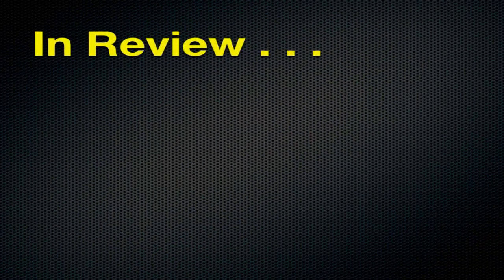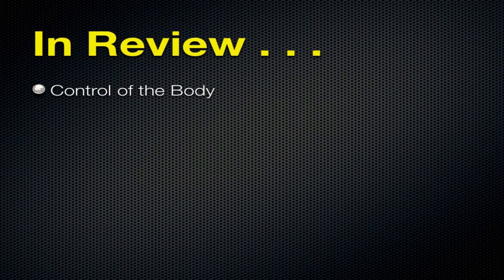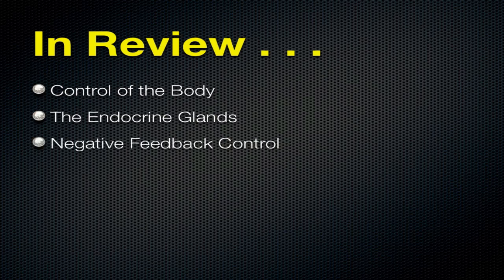In review, we have looked at the control of the body. It's done by the nervous system and the endocrine system - today we spoke about the endocrine system, the endocrine glands, negative feedback control like the thermostat, and specific examples of negative feedback control and how the endocrine system works. That is it for section 35.3.